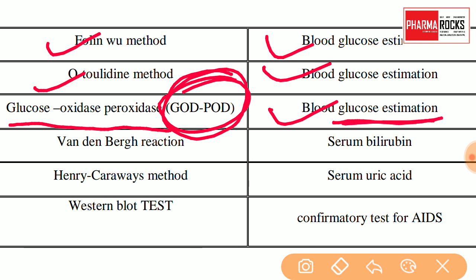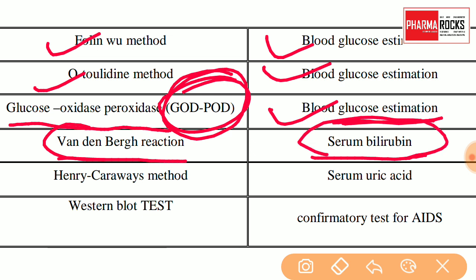Next is Van den Bergh's reaction — it is for serum bilirubin. ये भी बहुत ही important है. Van den Bergh's reaction is for serum bilirubin estimation.